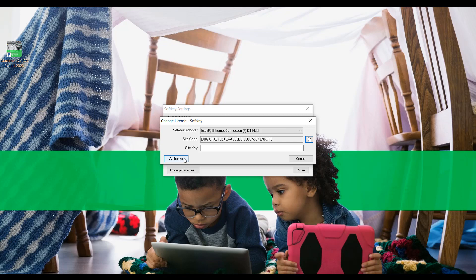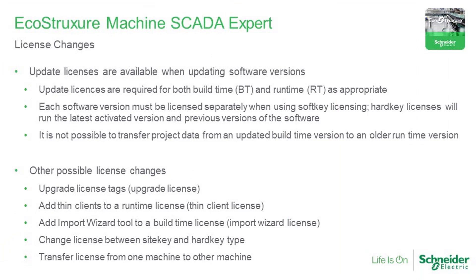The site key is used to activate a license for the first time or to make changes to an already existing license. For customers on older versions of EcoStructure Machine SCADA Expert, update licenses for build time and runtime are available. License updates only need to be purchased for major version upgrades. Update licenses are required for both build time and runtime version updates, and depending on the licenses purchased, you may need to update them separately or together.